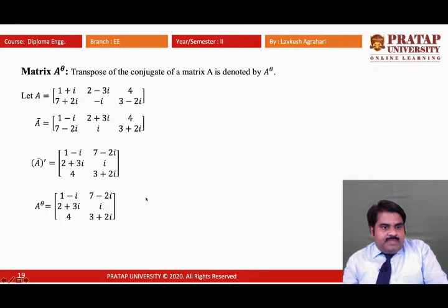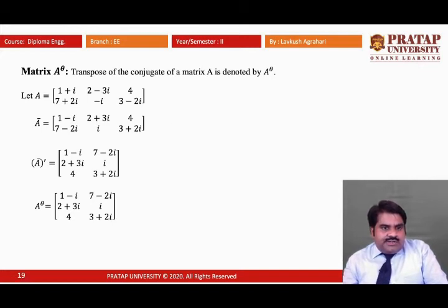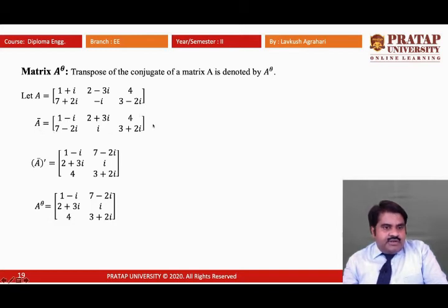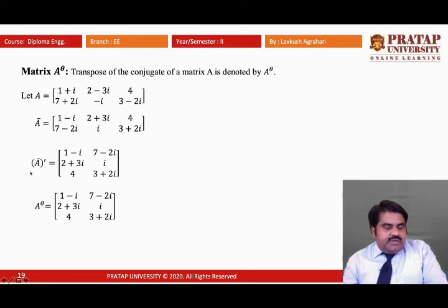Now, the matrix Aθ. If we take the transpose of the conjugate matrix Ā, the new matrix obtained is called the transpose conjugate matrix, denoted by Aθ. Starting from matrix A with two rows and three columns, we first find Ā, and then take its transpose to obtain Aθ.